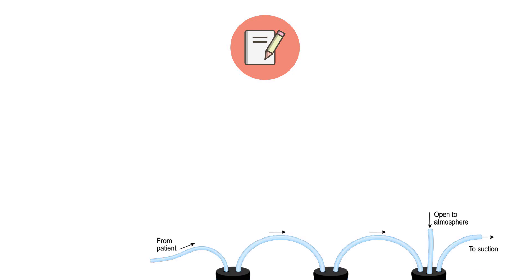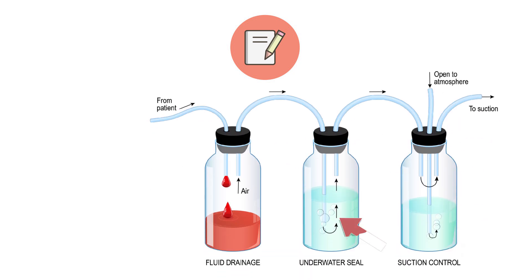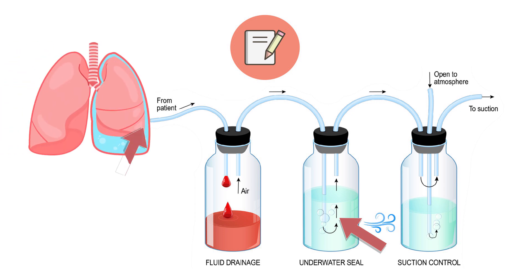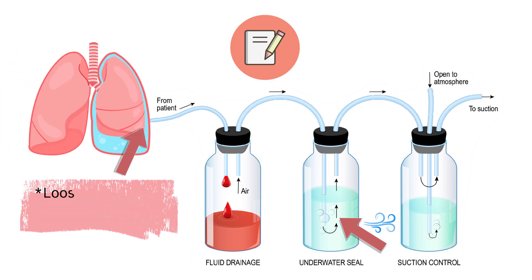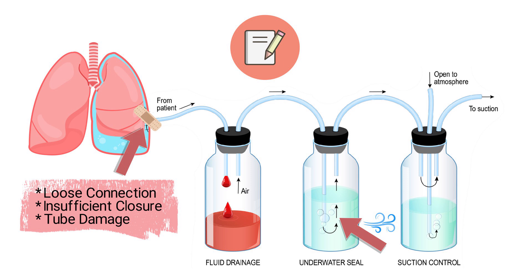The key takeaway is this: when you notice continuous bubbling in the water seal chamber, it almost always points to an air leak. You should check for loose connections, inadequate closure around the chest tube, or potential tube damage. The goal is to secure the insertion site with sutures and apply an occlusive dressing to create a proper seal and eliminate the leak.